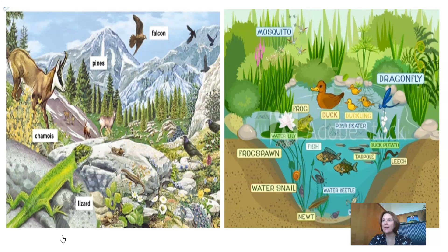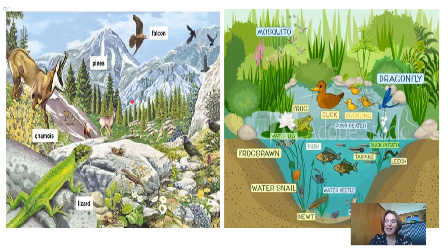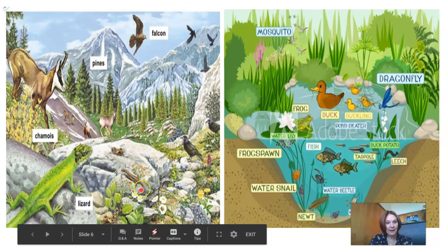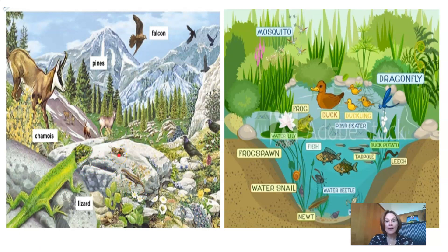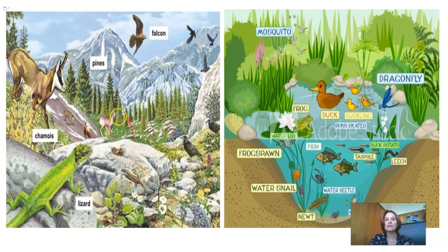Let's take a closer look at the animals living in these two ecosystems. Over here we have a mountain ecosystem. The living things would be the animals, such as the buck, the falcon, the lizard, and the birds. The non-living things would be things like the rock, the soil, the mountain, the air, and the temperature. All of these things depend on and interact with each other in order to survive.